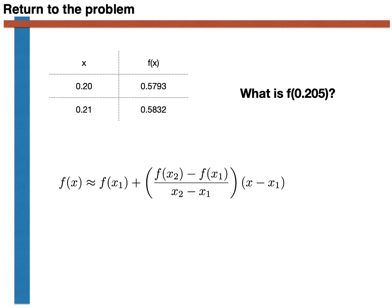Having established where this equation comes from, let's now use it to solve the original problem that we were given. We were given the values of the function at x equals 0.2 and x equals 0.21, and we were asked to calculate the function at x equals 0.205. We are going to do this using linear interpolation, so we are going to use the expression that we just arrived at on the previous slide. Let's thus start inserting the terms into this expression.